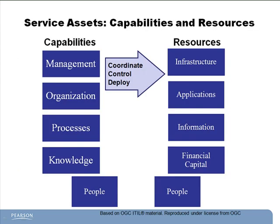What do organizations use to create value? They use their service assets. A service asset is anything that could contribute to the delivery of a service — simply something that an organization has. These things can either be the tangible things that your organization owns or the intangible skills that your organization has. In formal ITIL speak, service assets come in two flavors: capabilities and resources. Resources are the tangible things your organization has or can use to provide a service — things like infrastructure, routers, switches, servers, applications, or money. These are all tangible things that you can poke.